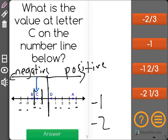So we have our first value of negative 2 thirds. Negative 2 thirds would be placed before negative 1, so that's not correct. Negative 1 is on this line, again not correct.